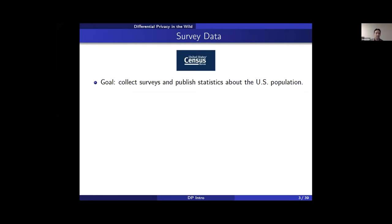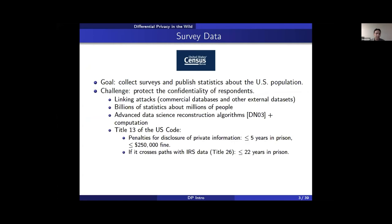First, there's the U.S. Census Bureau whose goal is to collect information about businesses and people in the U.S. This data can only be used for statistical purposes, which means that the information being published cannot be used to re-identify specific individuals. Over the years, this has become a challenging task for many reasons.